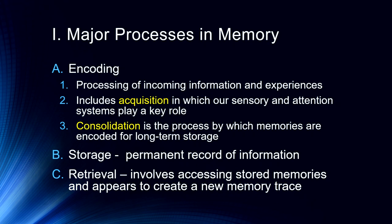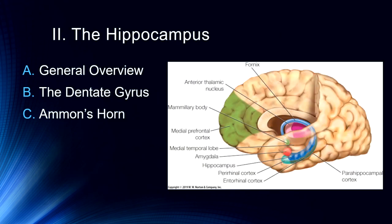When we start talking about emotion in the next chapter — a few lectures down the road — we'll really get into that. So it's really important. Let's get into talking about the hippocampus. We're going to start with a general overview here, then we'll talk about the dentate gyrus and Ammon's horn.